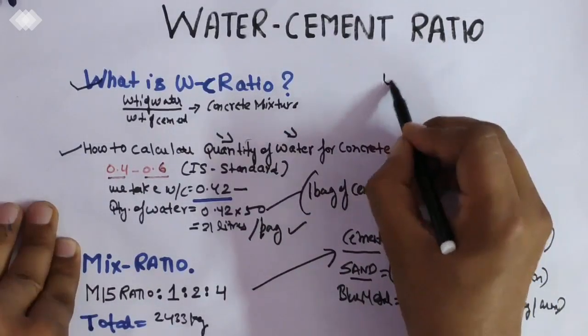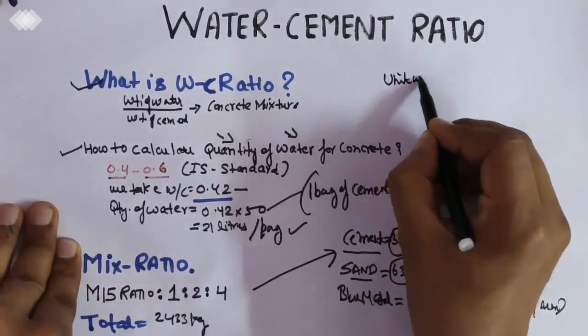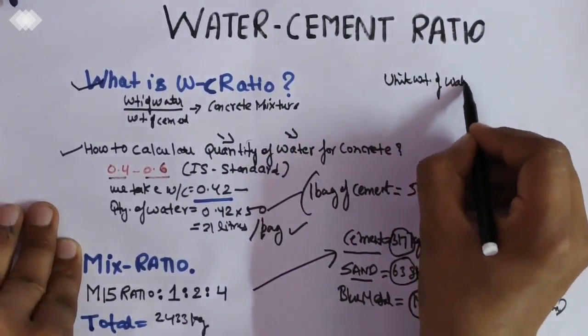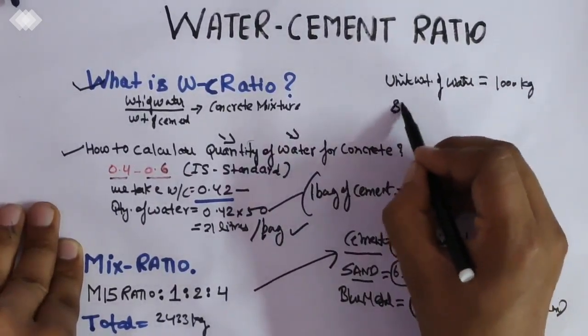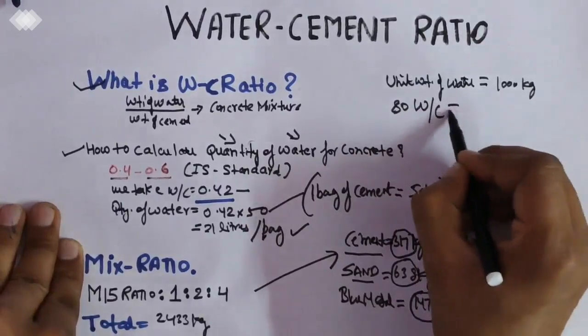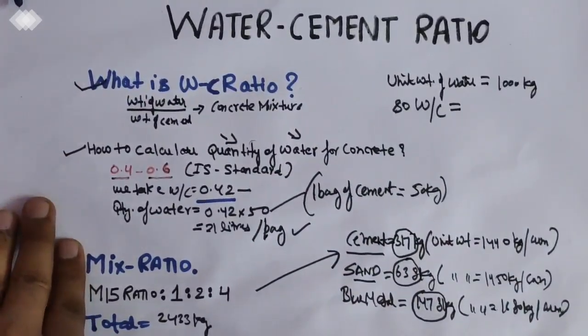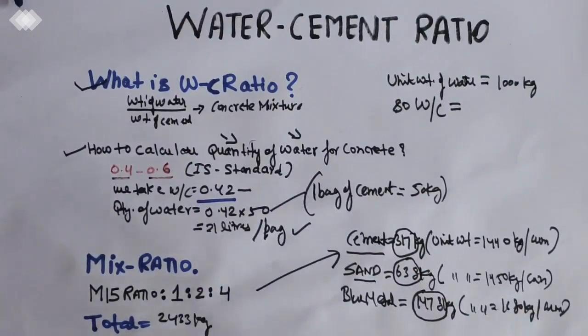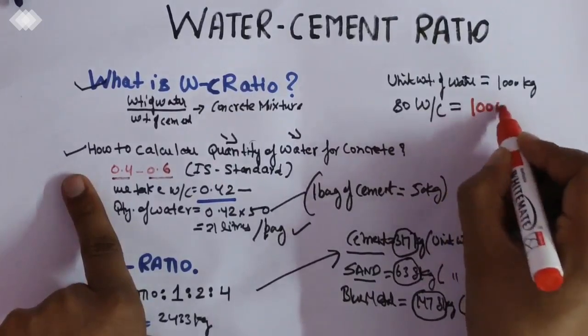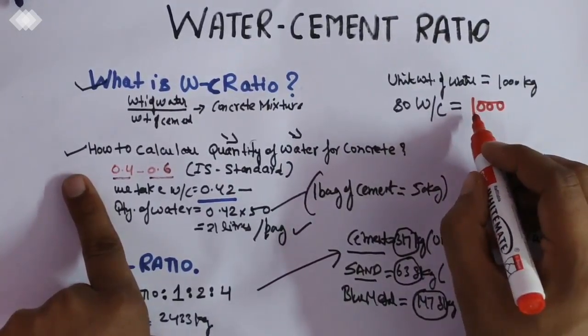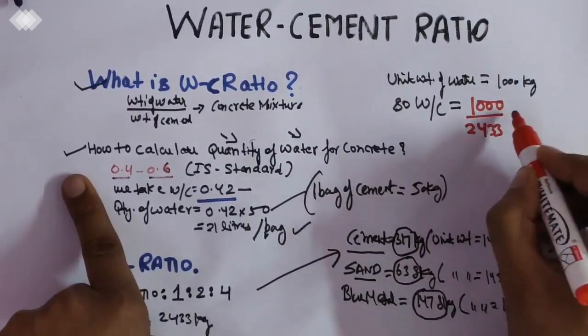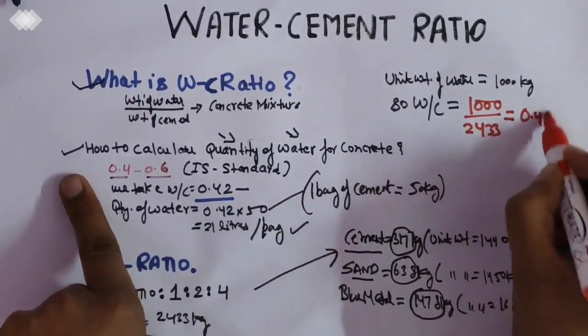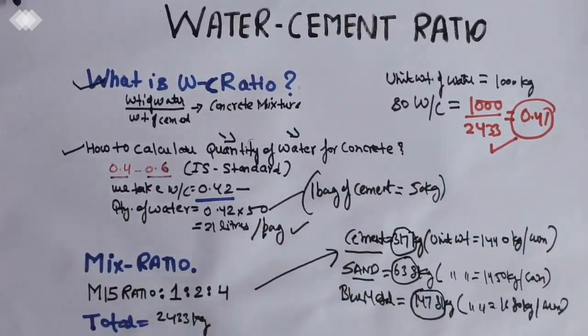So unit weight of water is 1000 kg. The water-cement ratio, or W/C ratio, comes out to be unit weight of water divided by total weight. That will give you 0.41 - 0.41 is the water-cement ratio for this grade.